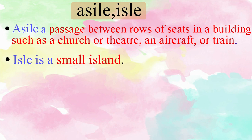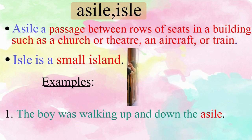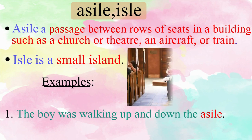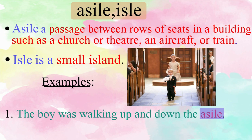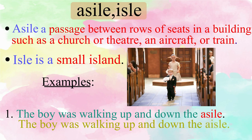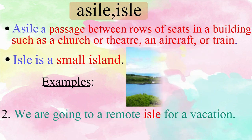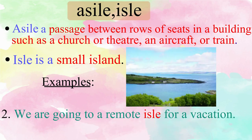To understand, please repeat these sentences. The boy was walking up and down the aisle. We are going to a remote isle for a vacation.